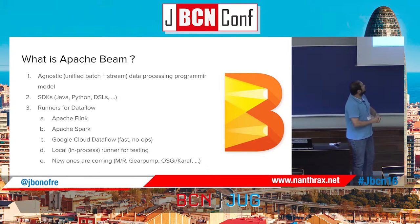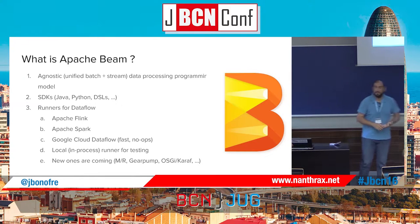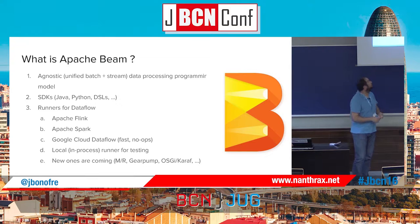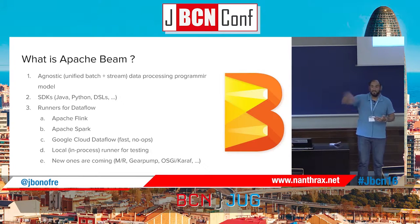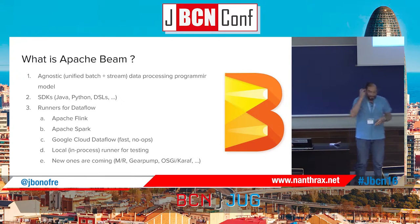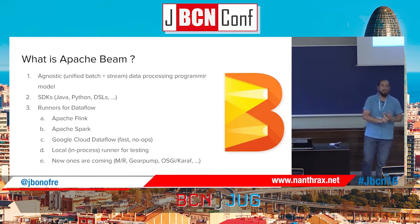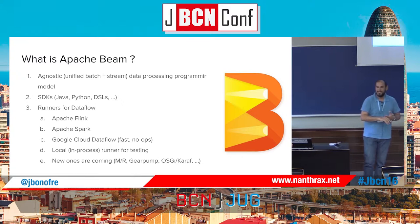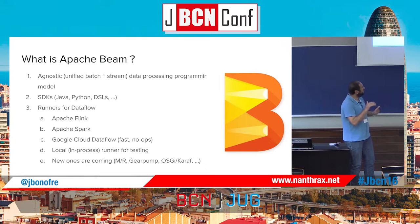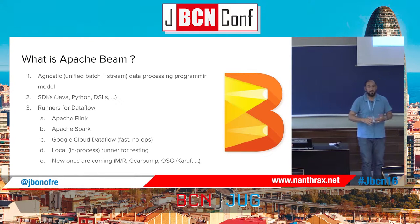The runners available right now include Apache Flink, Apache Spark, Google Cloud Dataflow, and the local direct runner. The local runner is very interesting — when you want to test your processing, you can run on a single JVM, exactly as you can do on your classroom machine. There are also new runners in development — a runner for Gearpump, which is a streaming engine from Intel, one for MapReduce, and one for Azure, so you can run data processing pipelines in Azure.